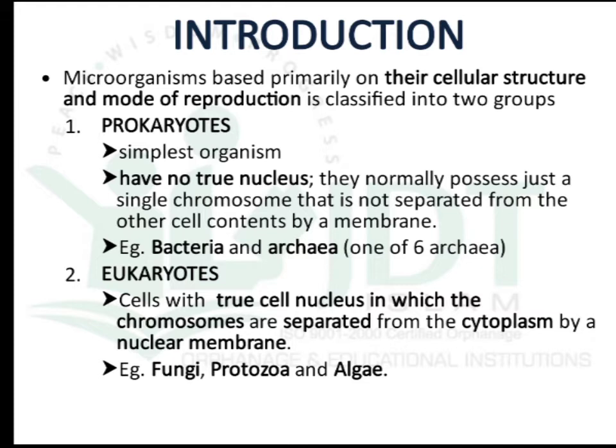Coming to eukaryotes, these are cells with a true nucleus in which the chromosomes are separated from the cytoplasm by a clear nuclear membrane. Higher organisms like fungi, protozoa, and algae are examples of eukaryotes.